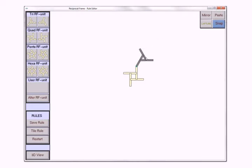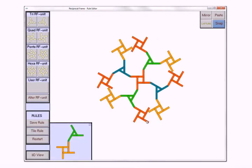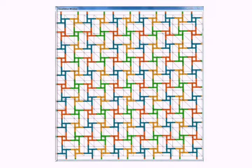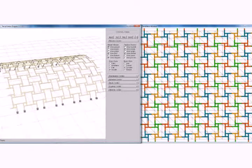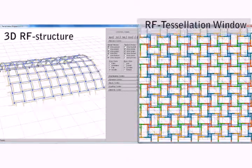If the rule is ill-defined, it cannot lead to a valid tessellation. For a valid tessellation, we can open a 3D viewer and produce an approximate RF structure on a 3D guiding surface.